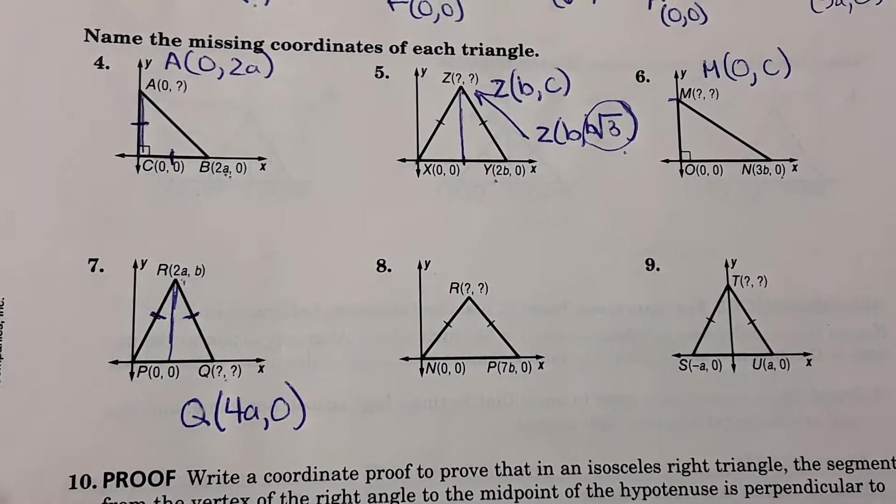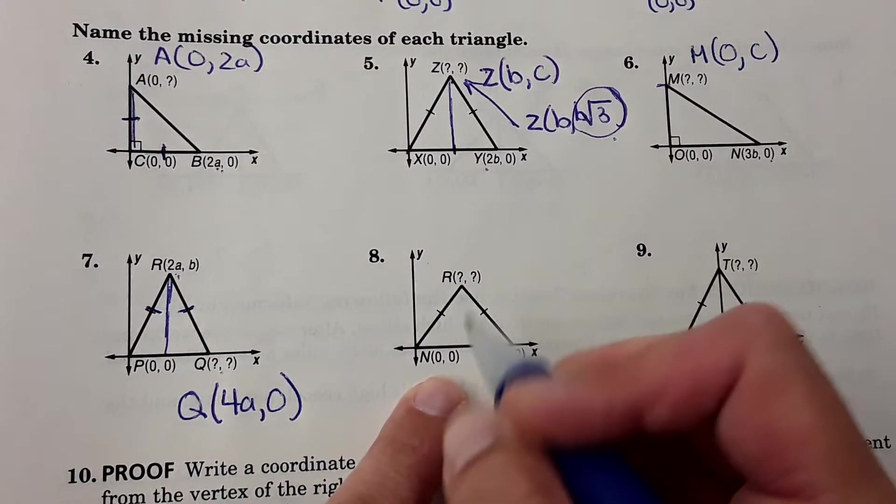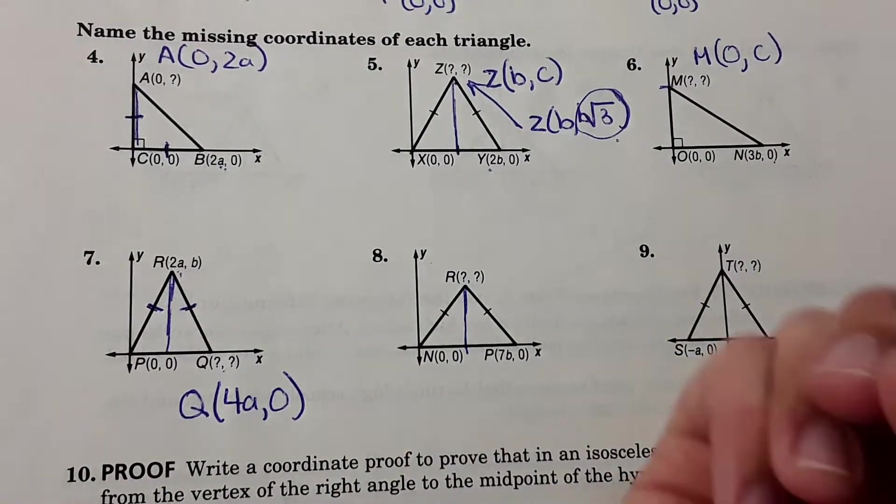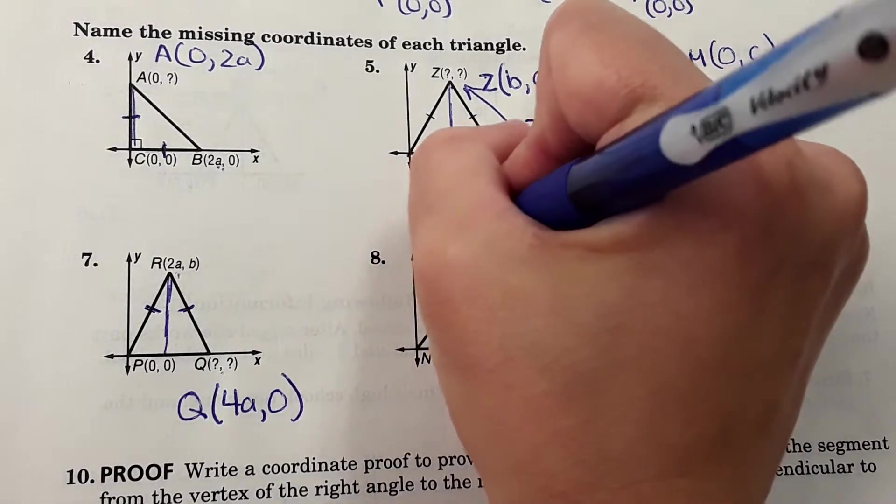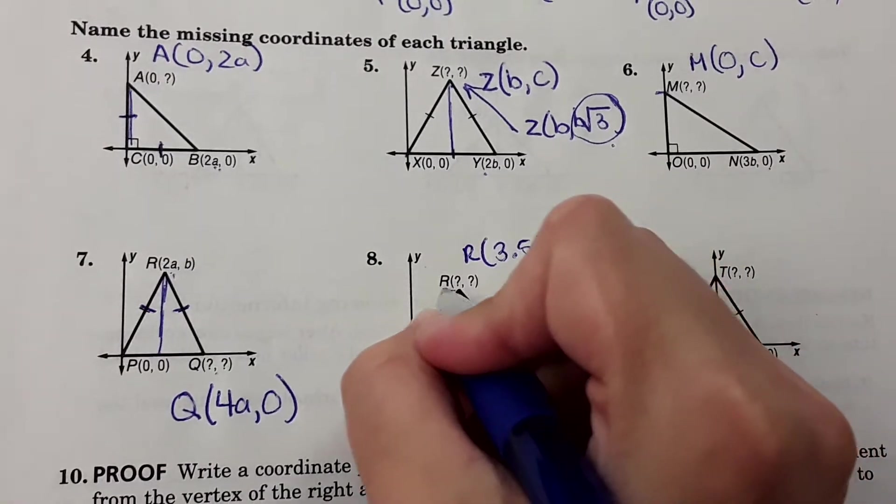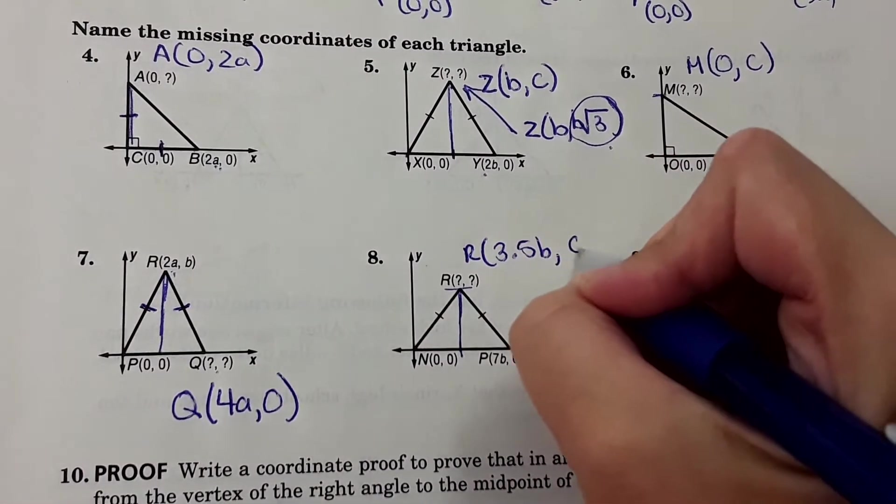Number eight for R. It is at the halfway point. Half of seven would be 3.5, so 3.5 B. And then the height here we don't know, it is just C.